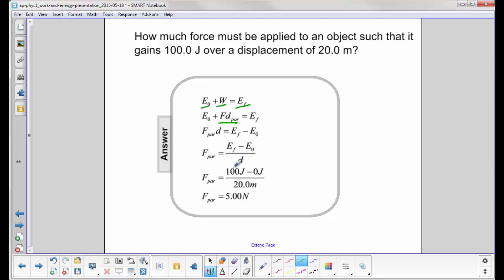So we have 100 joules minus zero joules divided by 20 meters, and we get 5.00 newtons.